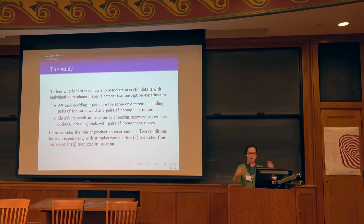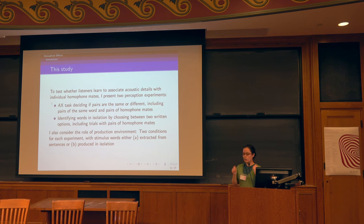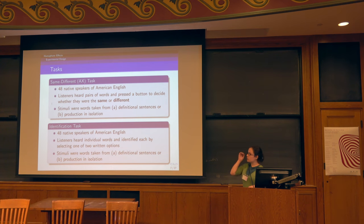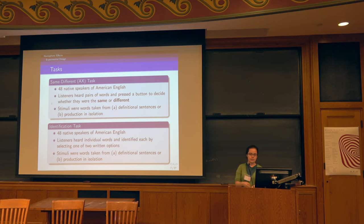So, is it even possible to get a split? What I'm looking at involves a little bit of production data, but the focus is on two perception experiments to determine whether, when we get differences in productions between homophone mates, listeners can actually pick up on that — either in same-different tasks or in identification tasks. I'm also considering the role of the production environment: stimulus words extracted from meaningful sentences versus produced in isolation. To the extent that differences in production exist, we only expect them to be apparent in the sentence-extracted stimuli.